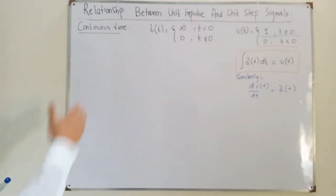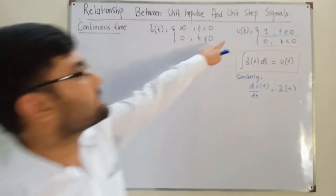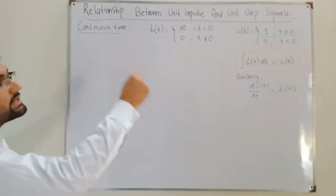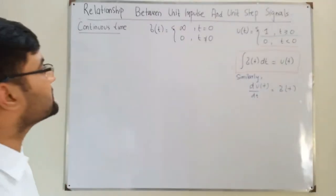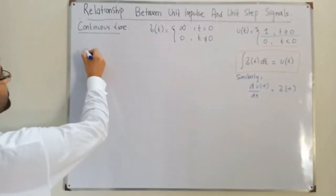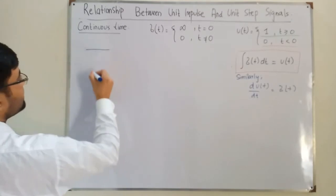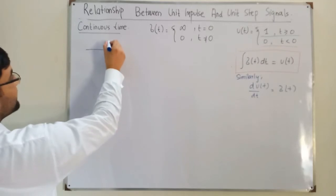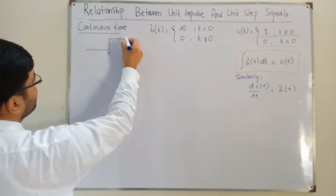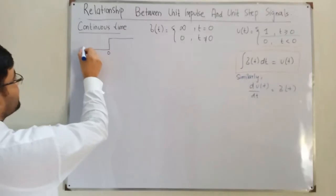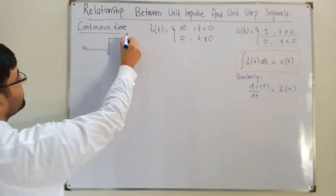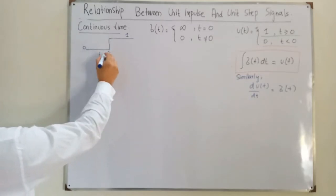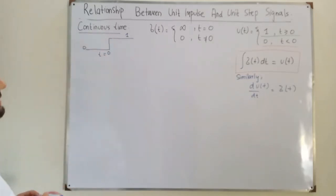In the unit step function we assumed the value jumps directly to 1 at t equals 0, going from 0 to 1 instantly. But actually this is not the real case — it is an idealization.